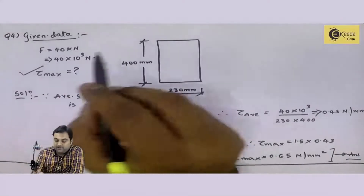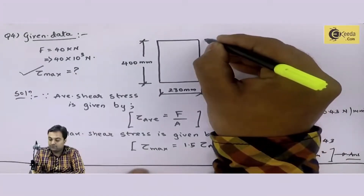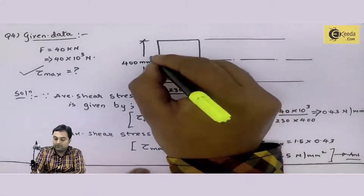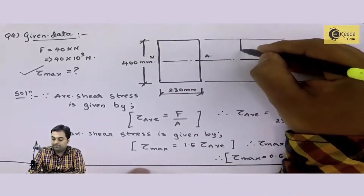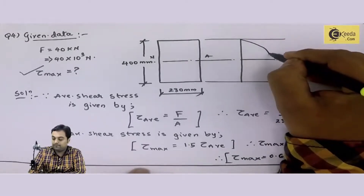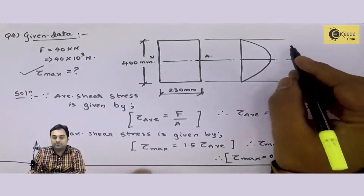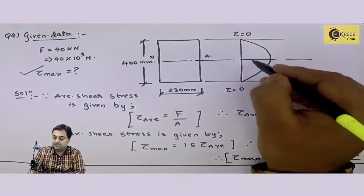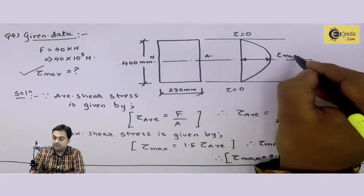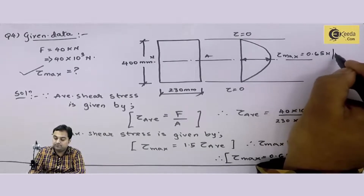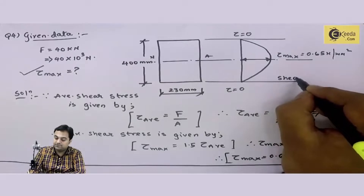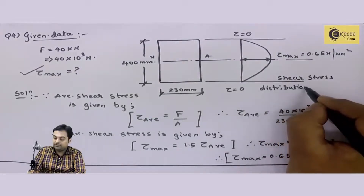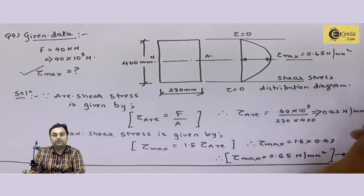Now you can also show the shear stress distribution. Here I have the neutral axis. The shear stress distribution is a parabola where shear stress is zero at the extreme ends and it is maximum at the center. So tau max, maximum at the center, is 0.65 Newton per mm square. This is the shear stress distribution diagram.